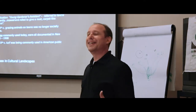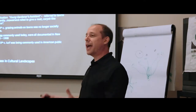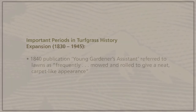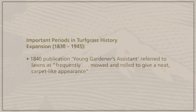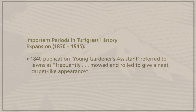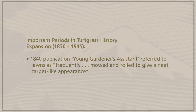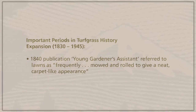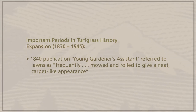As this equipment started to become more available, more lawns were established and maintained. An 1840 publication called the Young Gardener's Assistant referred to lawns as frequently mowed and rolled to give a neat and carpet-like appearance.